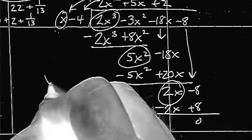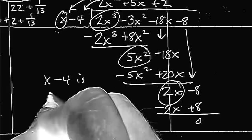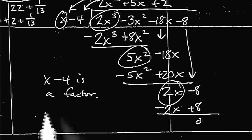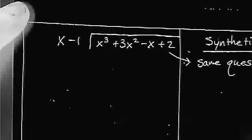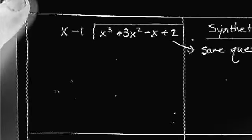So, x minus 4 is a factor because the remainder was zero.